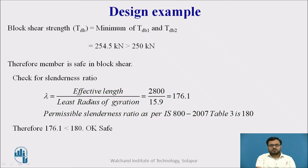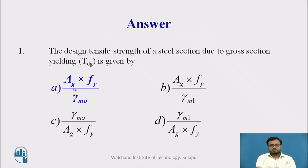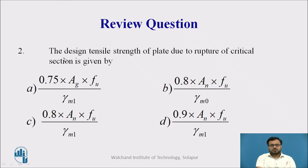Then we take a check on the slenderness ratio. Slenderness ratio is given by effective length divided by least radius of gyration. It is equal to 176. Now the permissible slenderness ratio as per IS 800-2007, Table number 3 is equal to 180. Therefore, 176 is less than 180. Safe. It is safe in slenderness ratio. These are some review questions. You can pause the video and answer this question. The design strength of the steel section due to gross section yielding TDG is given by. So TDG equal to which formula we use for the design of the section in gross section yielding. The answer is option A. And another question is the design strength of plate due to rupture of critical section is given by. The answer is option D.